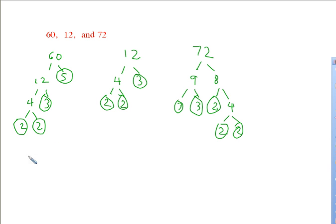So 60 is going to be equal to, if we write it out, 2 times 2 times 3 times 5. 12 is going to be equal to 2 times 2 times 3.